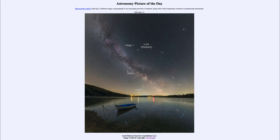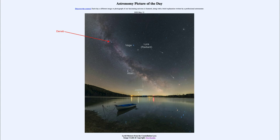We can also see the bright star Vega, which is the bright star in the constellation Lyra, located relatively close to the radiant point in this image. Along with the bright star Altair and the bright star Deneb, Vega makes up what is called the Summer Triangle — three bright stars prominent in the early evening summer sky.